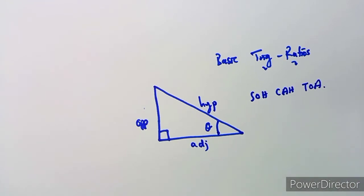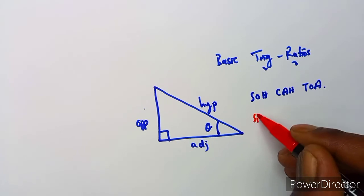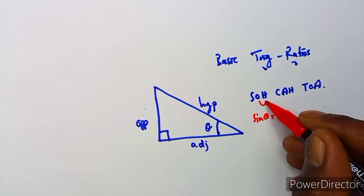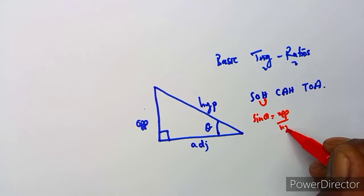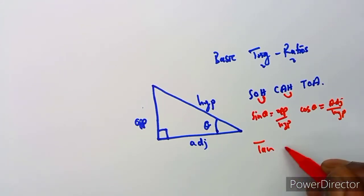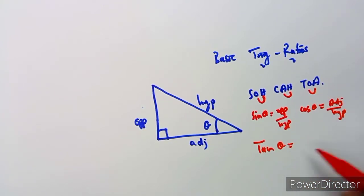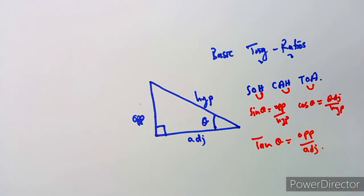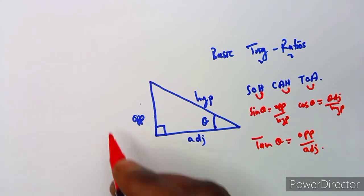We go back to your SOH CAH TOA. Sin theta is equal to opposite over hypotenuse. Cos theta is adjacent over hypotenuse. Tan theta is opposite over adjacent. These are the basic ratios we have, and now we have to add the other three.